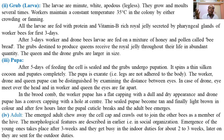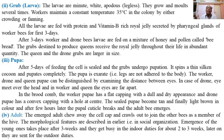The emerged adult chews away the cell cap and crawls out to join other bees as a member of the hive or colony. Emergence of young adults takes place after three weeks. They are engaged in indoor duties for about two to three weeks, after which they are sent for outdoor duties.